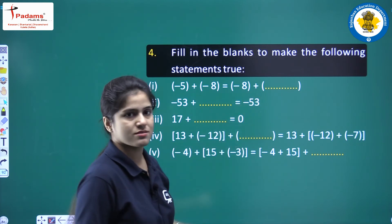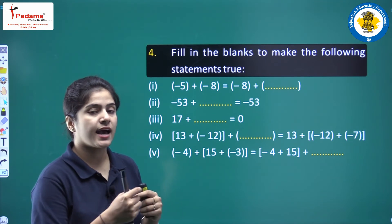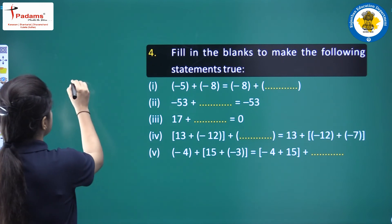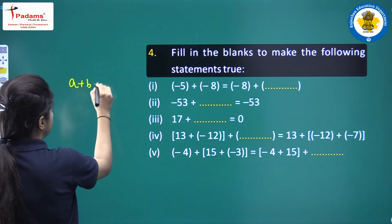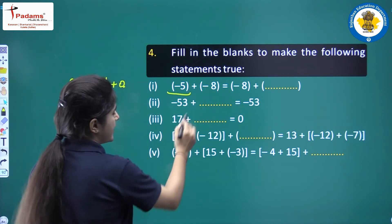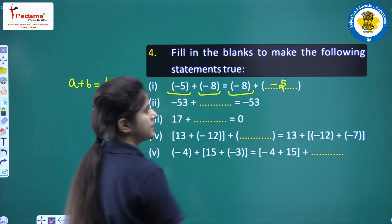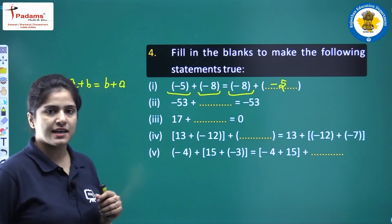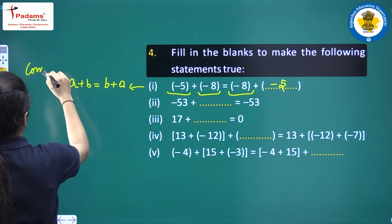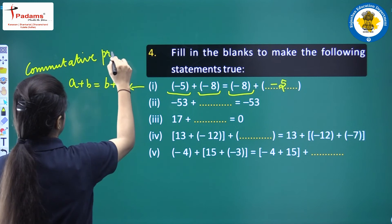Part a: minus 5 plus minus 8 equals minus 8 plus blank. By the commutative property, a plus b equals b plus a, so the answer is minus 5. This property is the commutative property under addition.